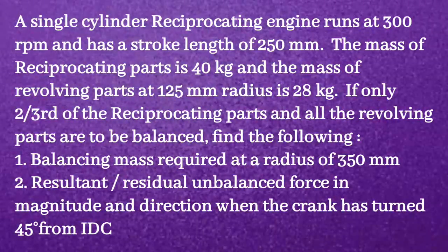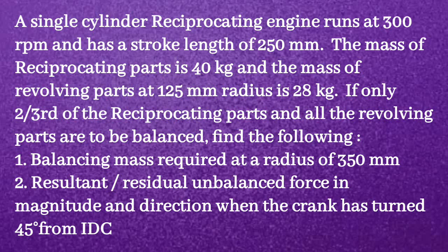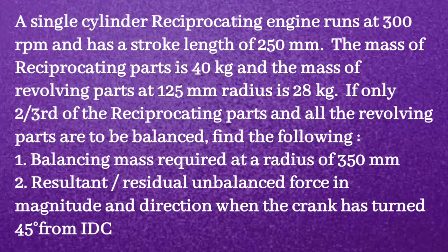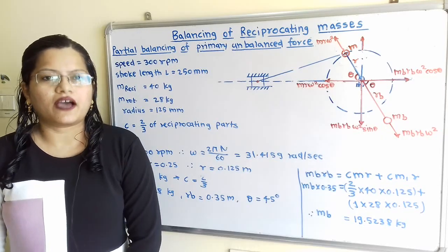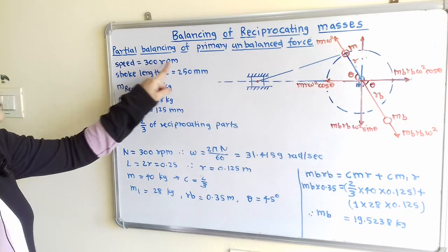Given problem: A single cylinder reciprocating engine runs at 300 rpm and has a stroke length of 250 mm. The mass of reciprocating parts is 40 kg and the mass of revolving parts at 125 mm radius is 28 kg. If only two-thirds of the reciprocating parts and all the revolving parts are to be balanced, find: (1) the balancing mass required at a radius of 350 mm, and (2) the resultant residual unbalanced force when the crank has turned 45° from the inner dead center.